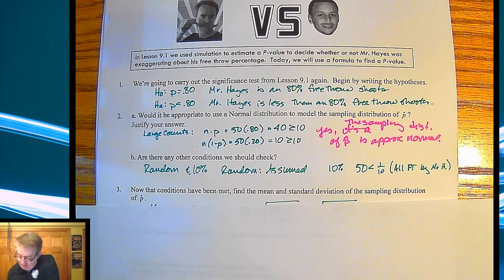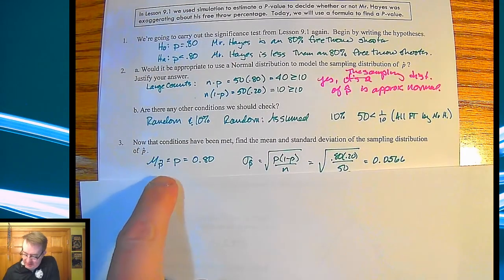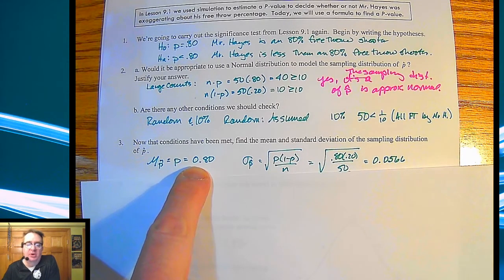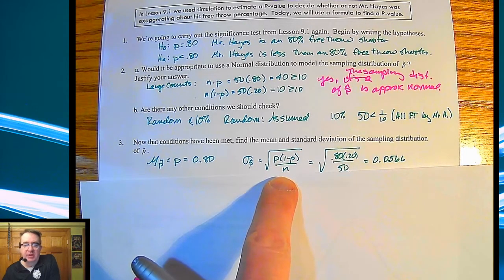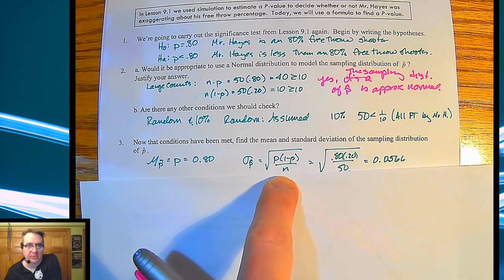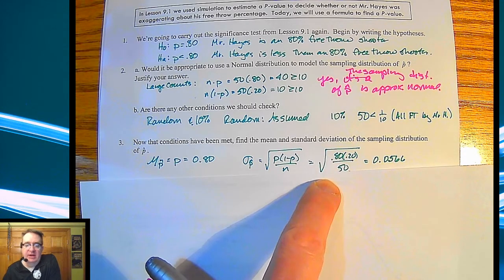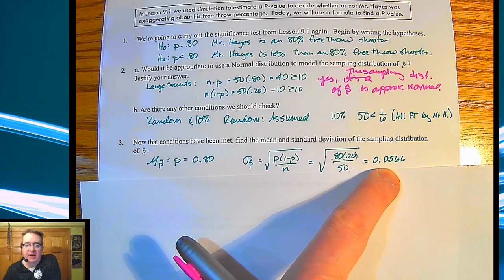So now that the conditions have been met, we're going to find the mean and the standard deviation. Pretty straightforward. Since we're assuming that my p-hat is actually p, we're going to go ahead and have that as 80%. Standard deviation, then, is going to be our regular formula for that. And then we plug all that in, and we get a standard deviation of 0.0566.